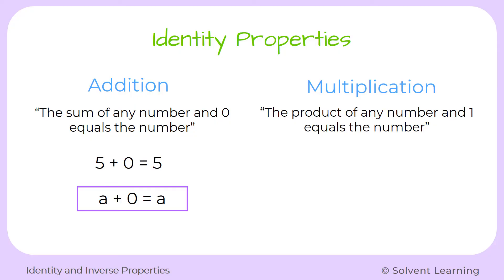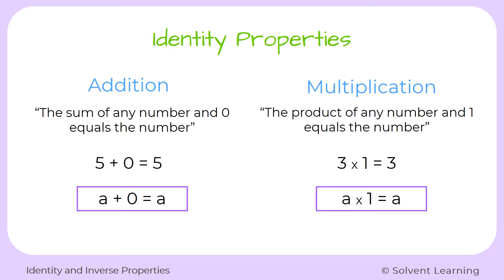The identity property for multiplication tells us that the product of any number and 1 will equal that number. So we can multiply any number times 1 and we'll still get that number as the answer. For example, 3 times 1 will equal 3. We can also represent that as a rule: any real number a times 1 will equal that same number we start with.